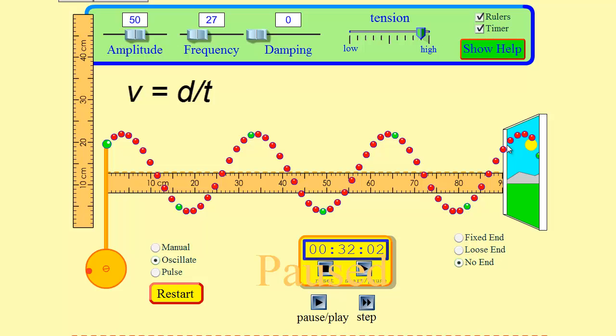Now the universal wave equation is exactly the same thing except we use specific parts of the wave. So instead of using this entire distance of this window here that we see in front of us, the entire 90 centimeters, we're going to use a specific distance.